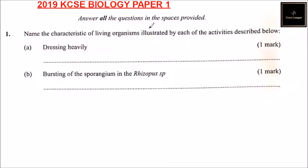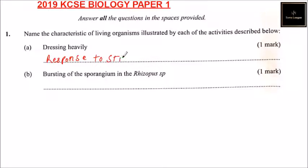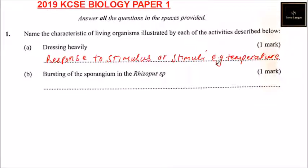This is question number one. Answer all the questions in the spaces provided. Number one: name the characteristics of living organisms illustrated by each of the activities described below. Part A — dressing heavily. A living organism would dress heavily when there is a change of temperature, when the temperature is low. The answer is response to stimulus, e.g. temperature. You can also say irritability or sensitivity, but the best answer is response to stimulus.